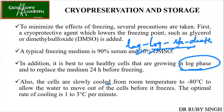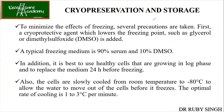You take the log phase culture and then they are slowly cooled from room temperature to minus 80 degrees Celsius, allowing the water to move out of the cells before it freezes. The rate of cooling is 1 to 3 degrees Celsius per minute.